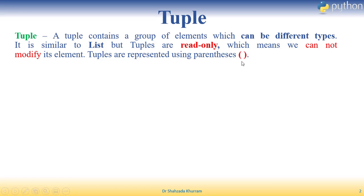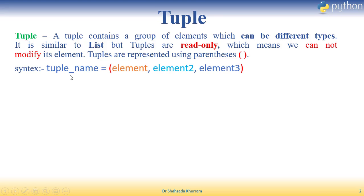Tuples ko jab bhi hum represent karte hain toh parentheses ke andar karte hain. Iska syntax: tuple name likhenge, assignment operator, phir parentheses start karenge, phir element likhenge — second element, third element, aur so on. Different data types iske andar likhe ja sakte hain. End mein parentheses ko close kar dete hain.